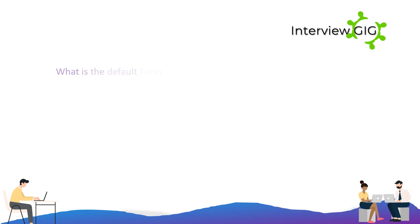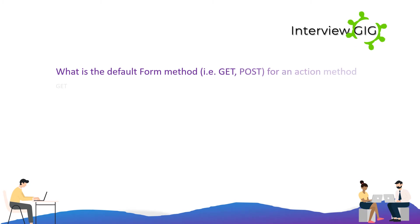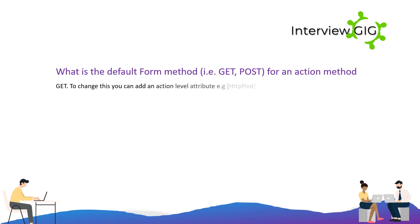What is the default form method — GET or POST — for an action method? GET. To change this you can add an action-level attribute HttpPost.